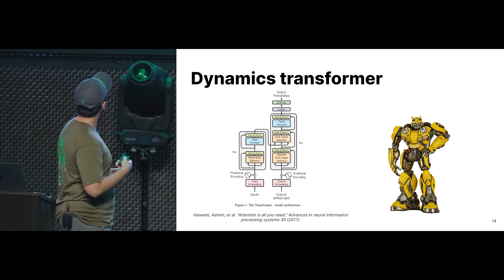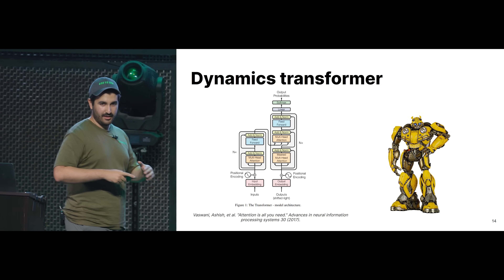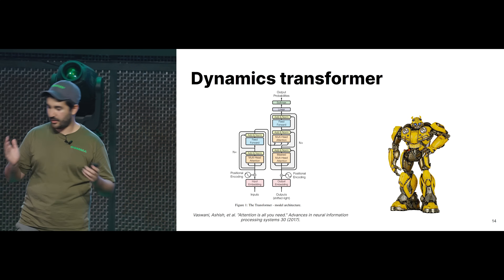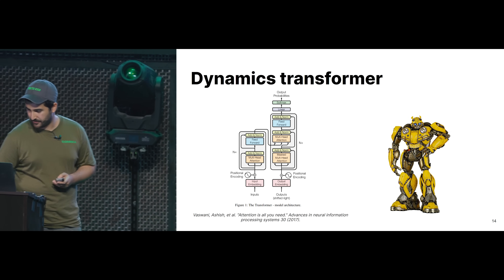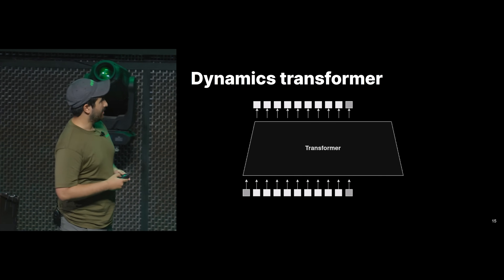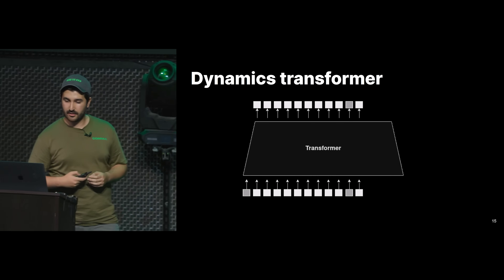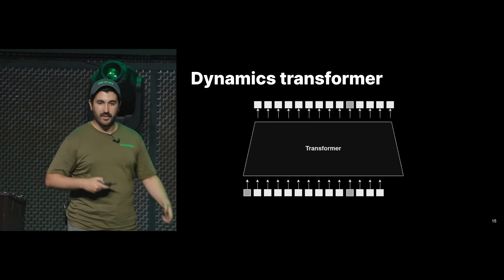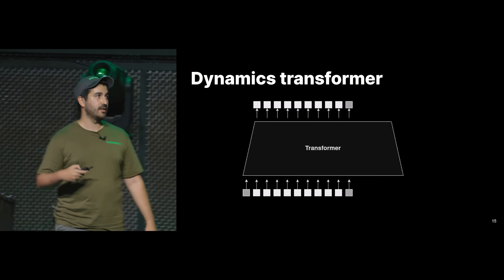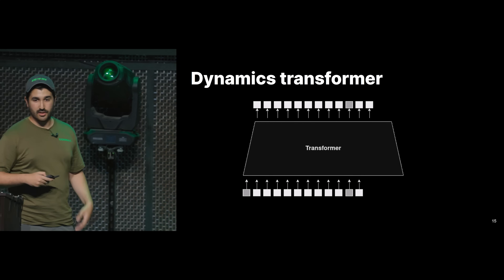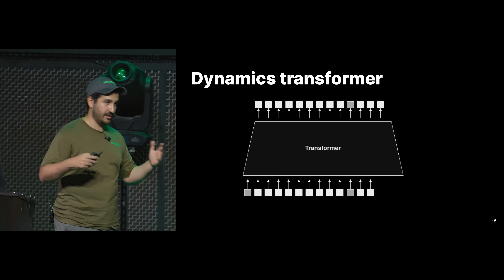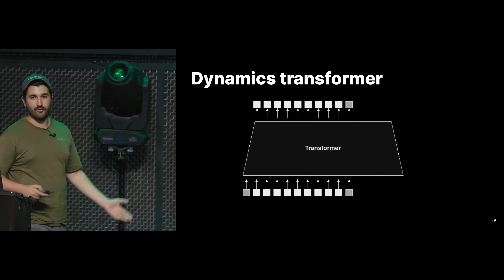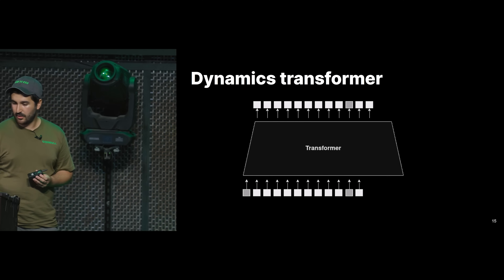A transformer is a fancy machine learning architecture that's a stack of fully connected layers and attention layers. We use this dynamics transformer one token at a time — it's autoregressive sampling. Each time we ask the model what the next token will be, take that token, plug it back into the inputs, then ask again what the next token would be. We do this until we reach a desired number of frames, generating as many frames as we want.